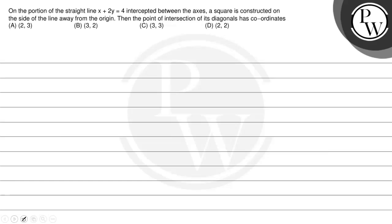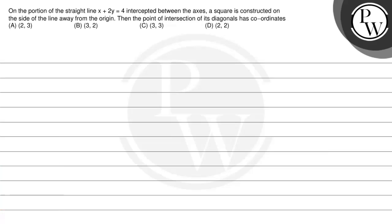Let us read the question. On the portion of the straight line x plus 2y equal 4, intercepted between the axes, a square is constructed on the side of the line away from the origin. Then the point of intersection of its diagonals has coordinates: option a (2,3), option b (3,2), option c (3,3), option d (2,2).